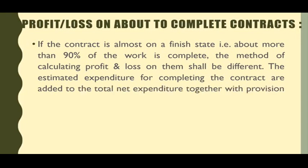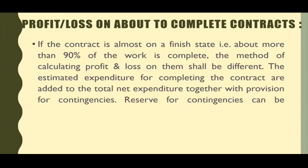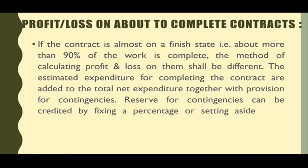Iske andar hum kya karte hai? Jo ab tak ka kharcha hum kar chuke hai, 90% per maan lijiye, jo hum kharcha kar chuke hai, voh to hum lete hai. Hum iske alawa, voh kharcha bhi lete hai jo further 10% pe ho sakta hai. Ab humara jo kharcha ho chuka hai, voh to ho gaya actual expenditure. Or jo kharcha ho sakta hai, voh ho gaya estimated expenditure. To actual kharch me estimated kharch ko jod kar, hamare paas total kharcha aa jayega ki contract per lagbhag itna kharcha ho jayega.